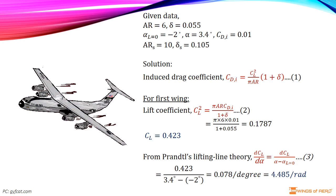Given data: the aspect ratio of the rectangular wing is 6, induced drag factor delta is 0.055.